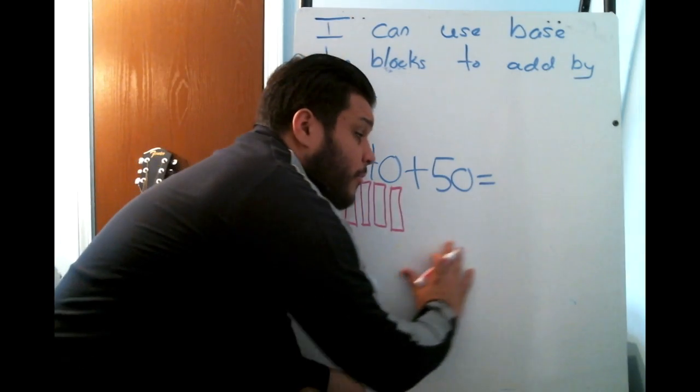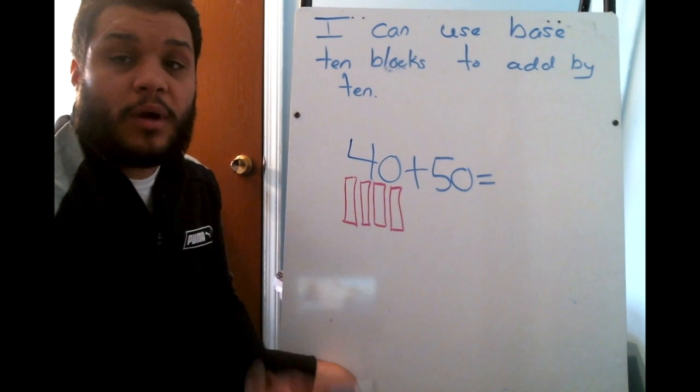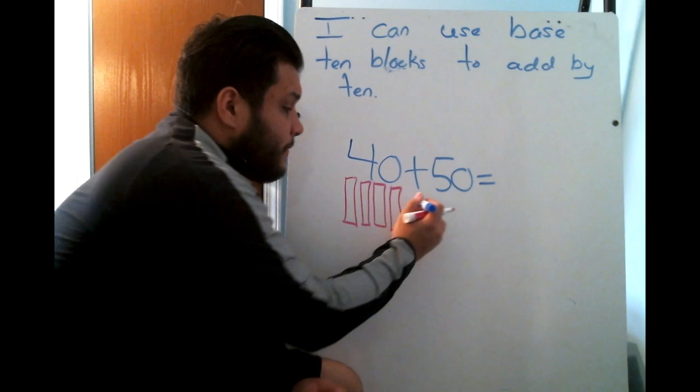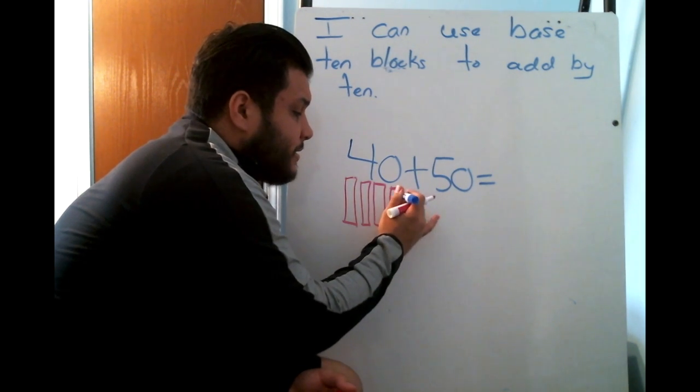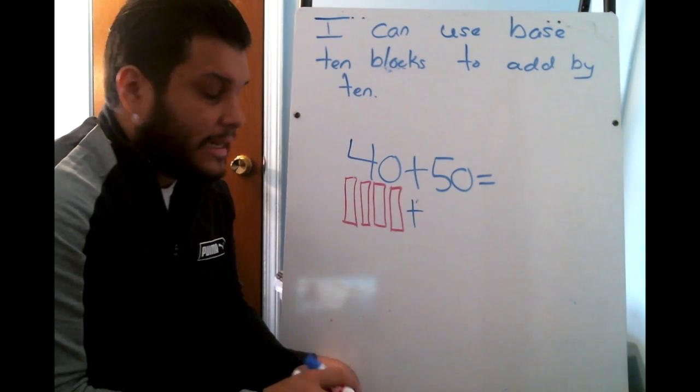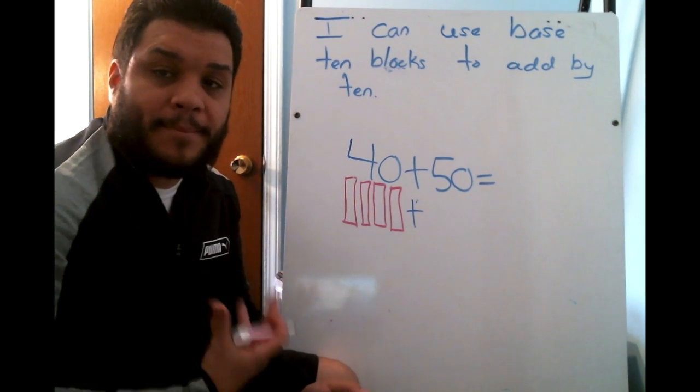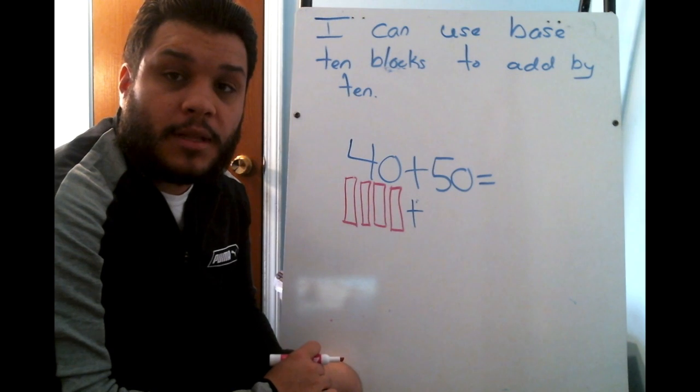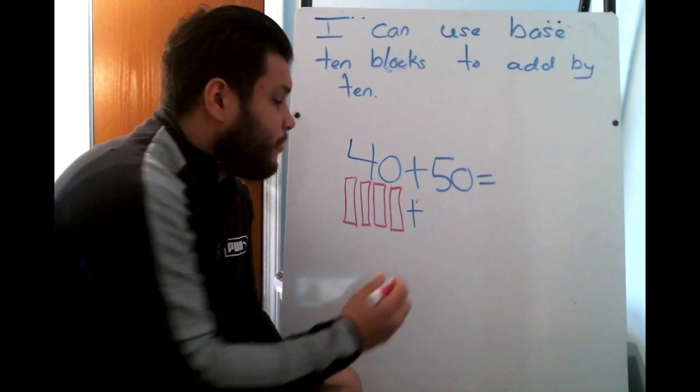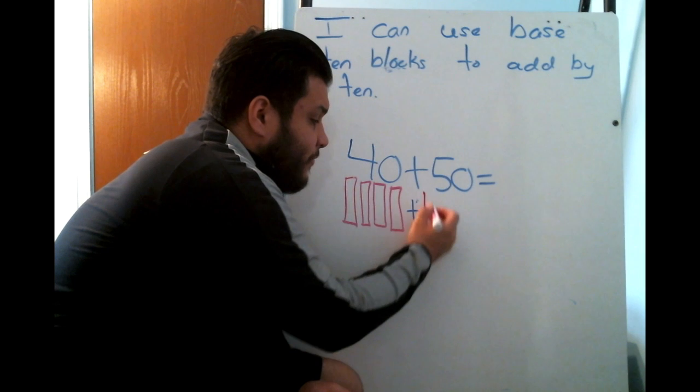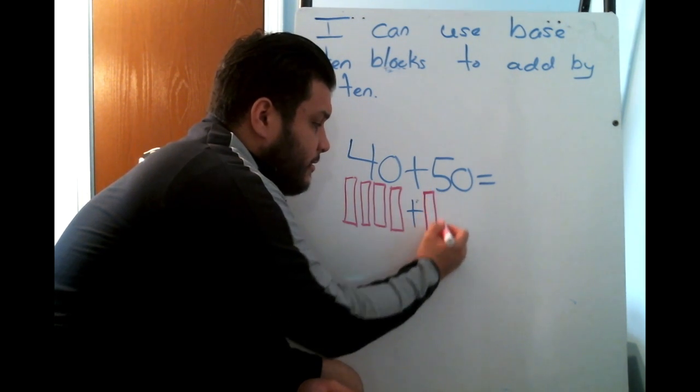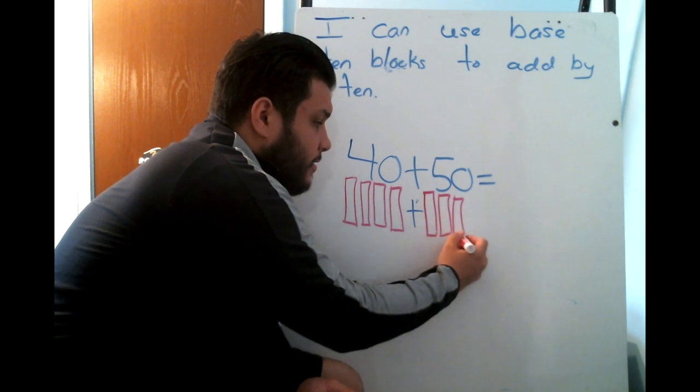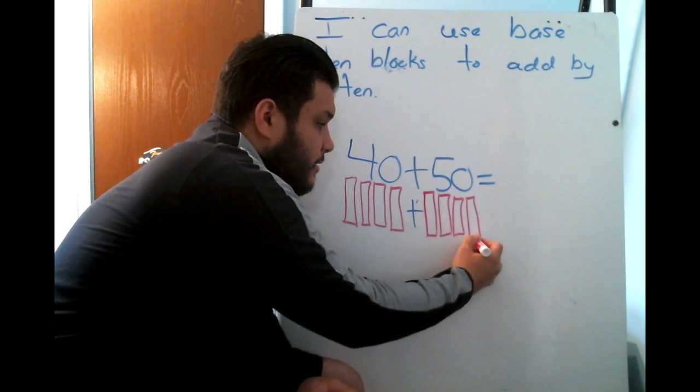Notice how my four base 10 blocks are aligned or underneath the number 40. I didn't draw them all across because I still want my work to be organized. Now, I like to bring my plus sign down just because it helps me stay organized. Now on the other side, how many base 10 blocks should I have in the number 50? Awesome. If you said five, kiss your brain. So I'm going to draw five more over here. 10, 20, 30, 40, 50.